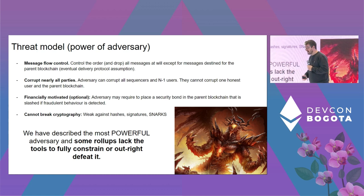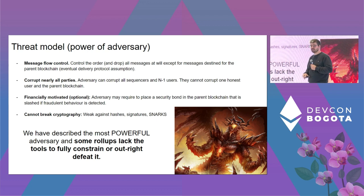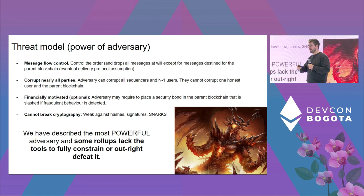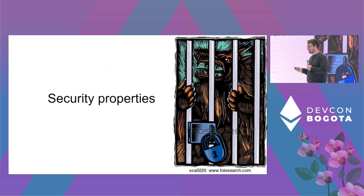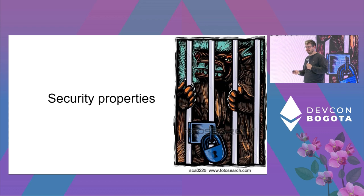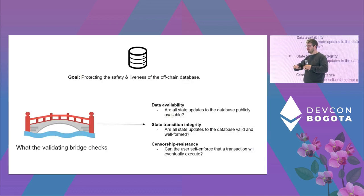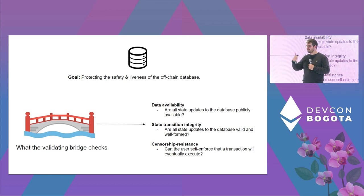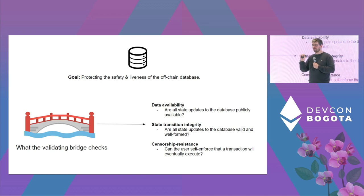This is the most powerful adversary you can face — they literally control the entire off-chain system. If you look at L2Beat, no rollup today with smart contract support can actually defend against this adversary. It's a very difficult challenge and will probably be another year or two before a rollup can defeat it. The overall security goal is to protect the off-chain database's safety and liveness, with three sub-goals from the bridge's perspective.